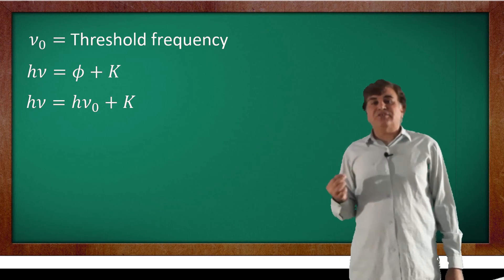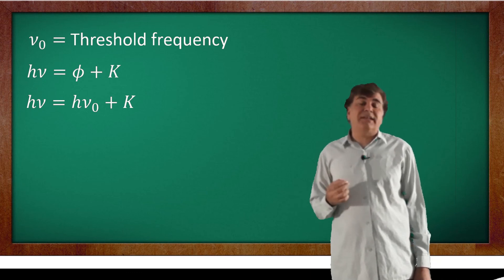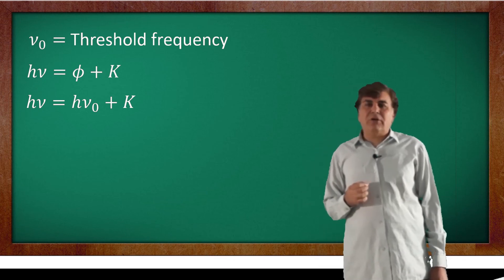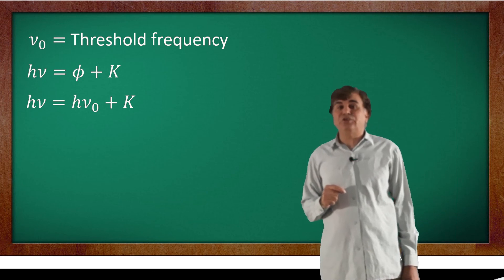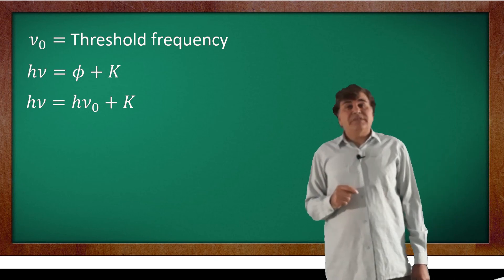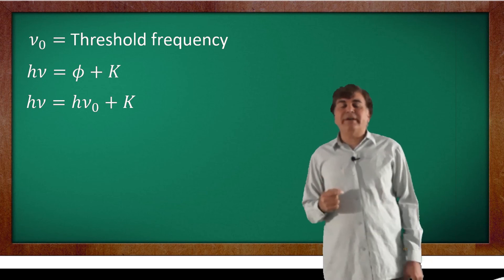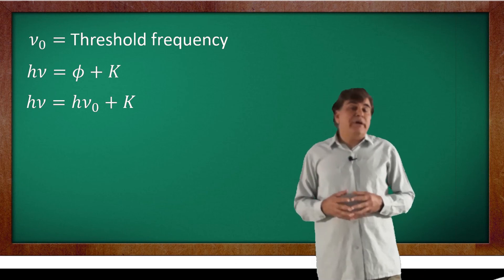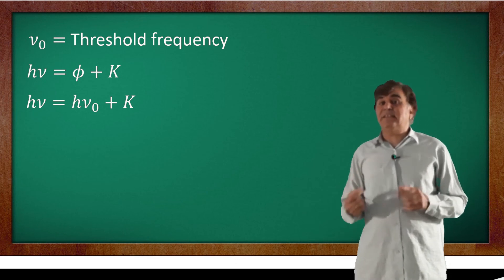But still, the wave theory of light had such strong experimental evidences that the explanation of these phenomena were not sufficient to turn the minds of physicists against it. Due to this reason, Planck's quantization theory of harmonic oscillators and Einstein's quantization theory of light were not readily accepted. It took around one and a half decades to turn the minds of physicists in favor of the quantization theory of radiation.